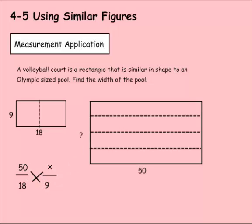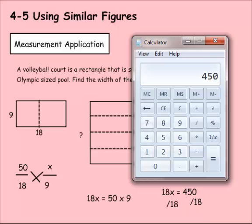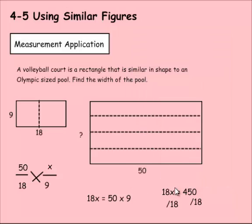X times 18, 18 times X equals 50 times 9. 50 times 9 is 450. So 18 times X equals 450. Divide both sides by 18. 450 divided by 18 would be 25. So X equals 25. I can put 25 over here because that's how wide the pool would be.